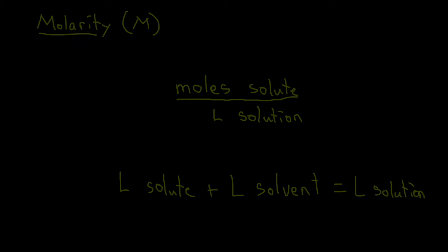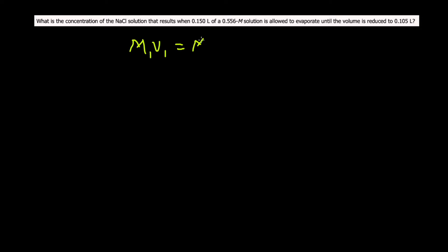Let's take a look at an example. The question states: what is the concentration of NaCl solution that results when 0.15 liters of a 0.556 molar solution is allowed to evaporate until the volume is reduced to 0.105 liters? These questions are typically solved with the formula M1V1 = M2V2, where M represents concentration and V represents volume in liters. We are given the original concentration of 0.556 molar, and the solution will evaporate, meaning some of the water will be gone.